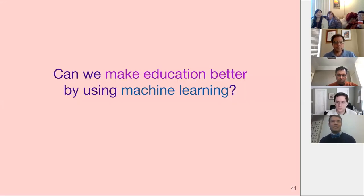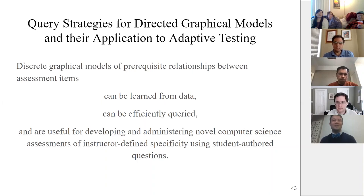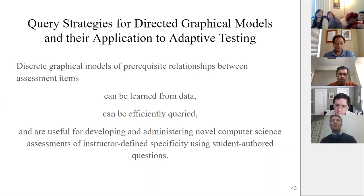If I were to boil down the title of this talk, it would be: can we make education better by using machine learning? The short answer is yes. But for my thesis committee, I have a more specific statement: discrete graphical models of prerequisite relationships between assessment items can be learned from data, can be efficiently queried, and are useful for developing and administering novel computer science assessments of instructor-defined specificity using student-authored questions. We'll use a shortened form of that thesis statement as an outline for the rest of the talk.